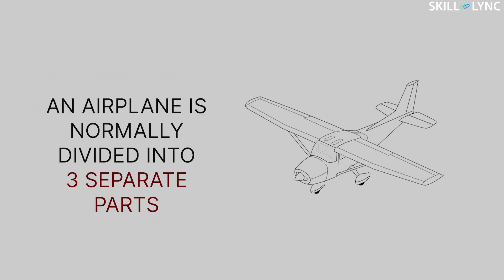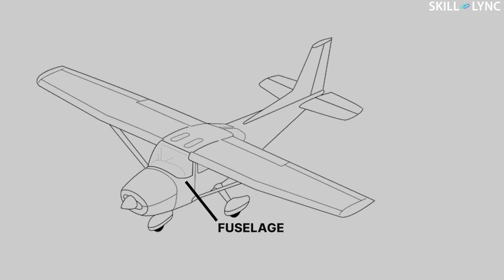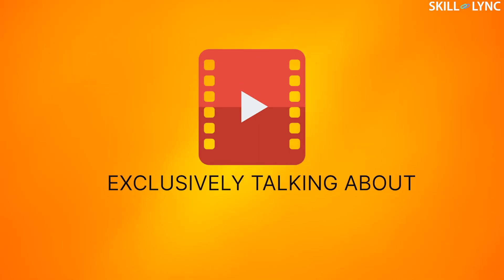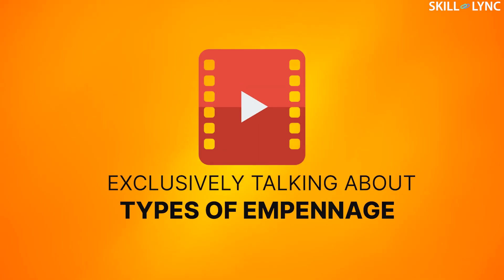An airplane is normally divided into three separate parts during the manufacturing process. First is the fuselage — the hollow body where the passengers or cargo is carried. The second is the wings, and the last is the empennage. The main role of the empennage is to give directional stability and control to the aircraft. In this video, we will be exclusively talking about different types of empennage of aircraft.